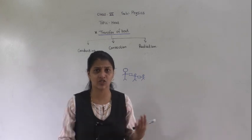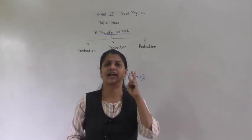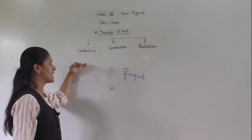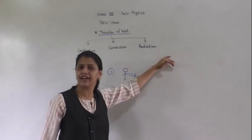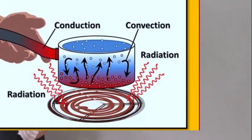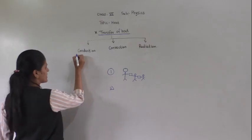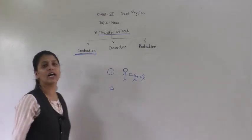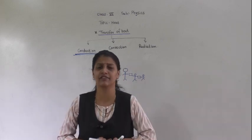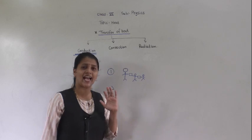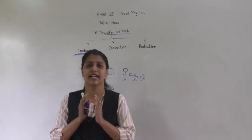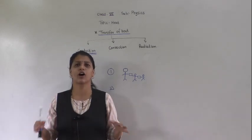Like that, in nature, heat transfer takes place by three ways: conduction, convection, and radiation. Today, in this video, I am going to discuss only about conduction. What is conduction? Conduction is the process of heat transfer in which there is no actual movement of molecules.